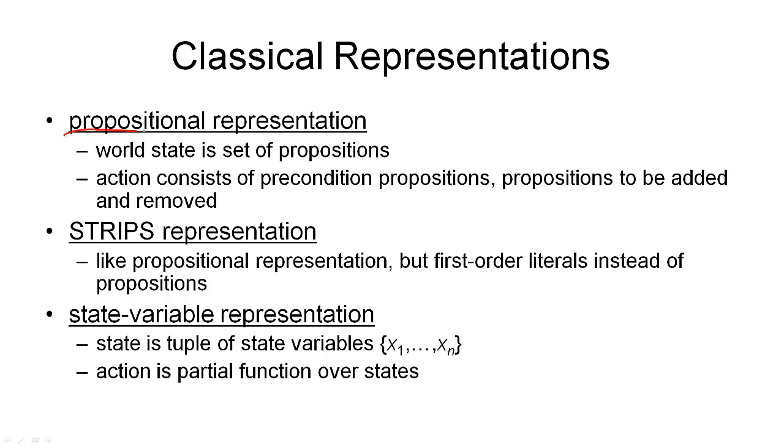The simplest representation is the propositional representation. In the propositional representation, a world state is described by a set of propositions. A proposition is a simple symbol. It does not contain any internal structure. In the STRIPS representation, in a state, we have first order atoms, ground atoms to be more specific, and these relate objects to each other. In the propositional representation, there are only proposition symbols. Actions in the propositional representation consist of preconditions, postconditions to be added and removed.